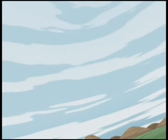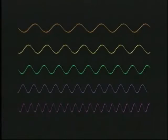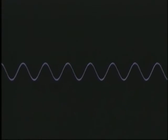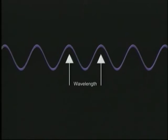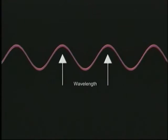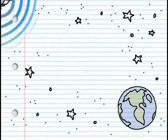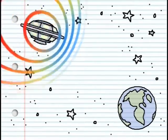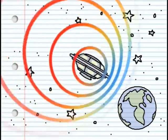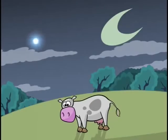Light also travels in waves, and a similar thing happens to these waves. Light waves are able to compress and stretch, thereby changing their frequency or color. Blue light has shorter wavelengths than red light. When an object in space moves towards us, its light waves are compressed into higher frequencies or shorter wavelengths, and hence we say that the light is blue shifted.